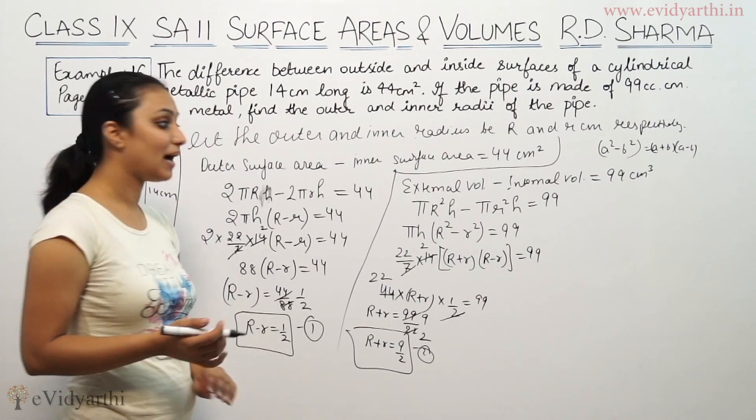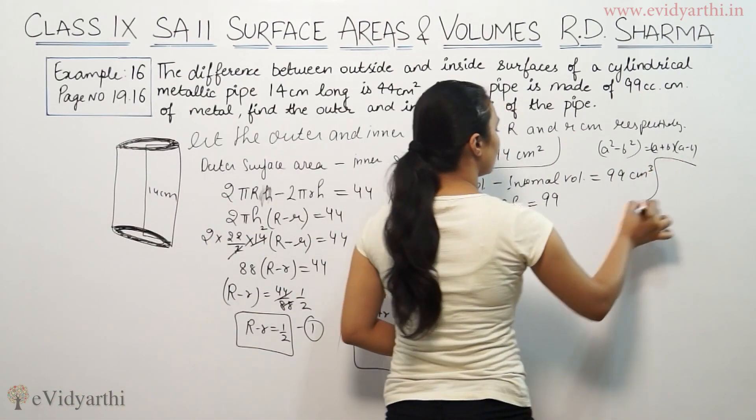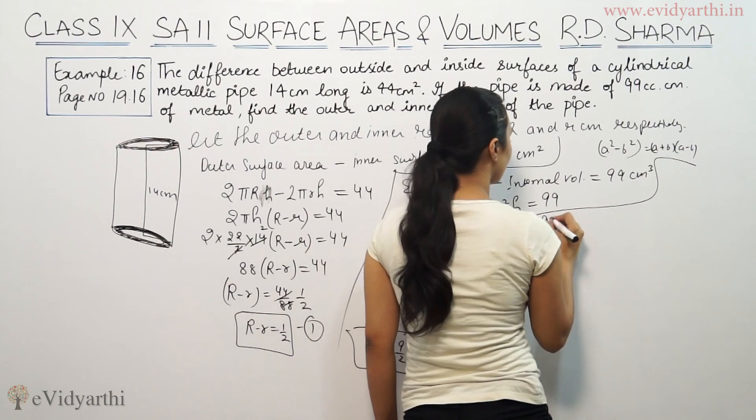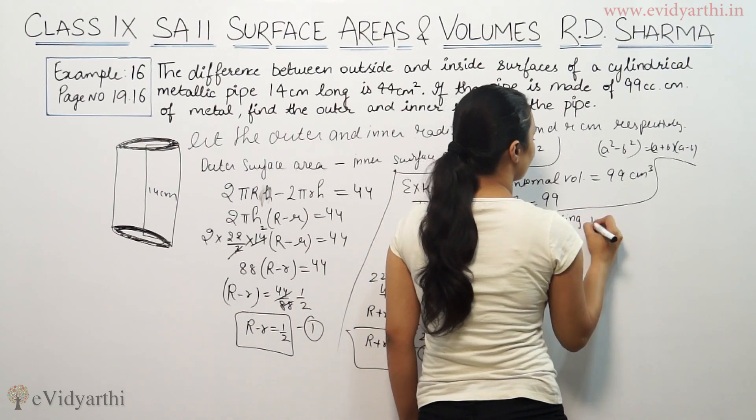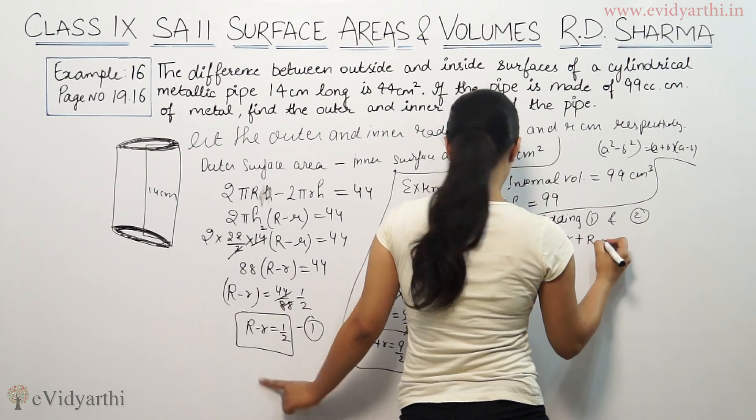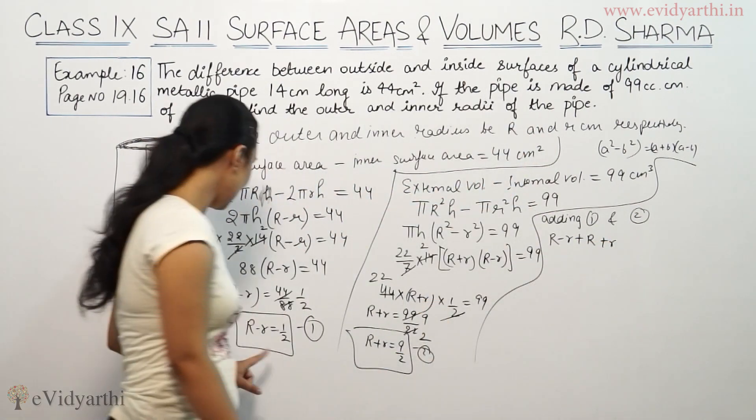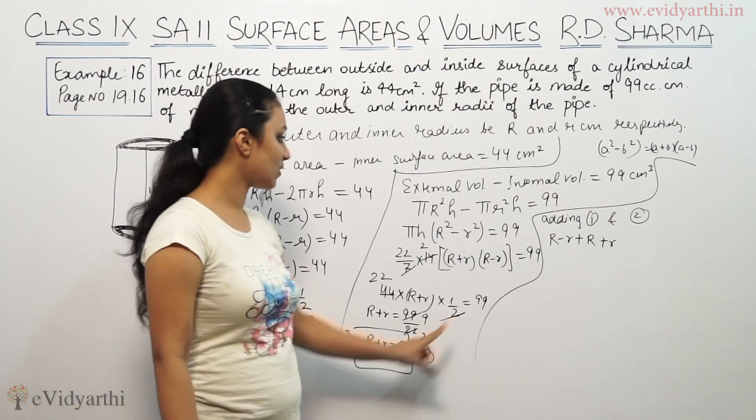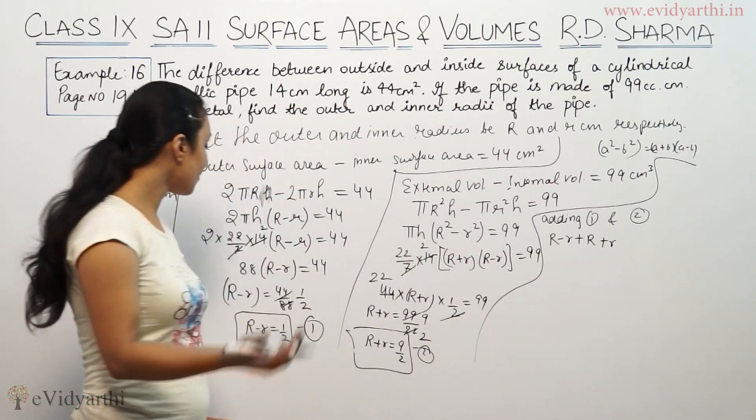Now let's add these two equations. So adding first and second: R + r and R - r. On RHS: 1/2 + 9/2.